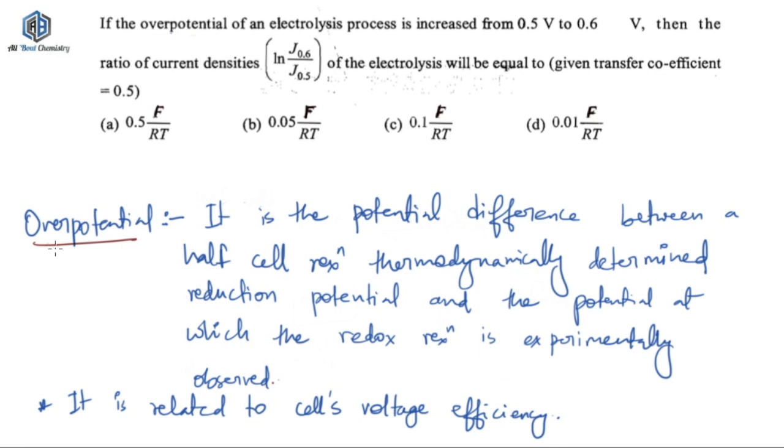So the difference between those two are called as overpotential and this overpotential is directly related to the cell's voltage efficiency. That means it tells you that how much amount of voltage you are giving and is that voltage getting converted into the reaction or not. So overpotential is experimentally determined by measuring the potential at which the given current density is achieved. So you need to know just one thing that what is overpotential. It's a difference between the potential difference of a redox reaction calculated thermodynamically and experimentally and it relates the or it tells you about the cells voltage efficiency.